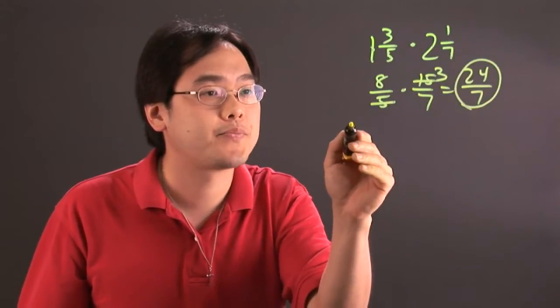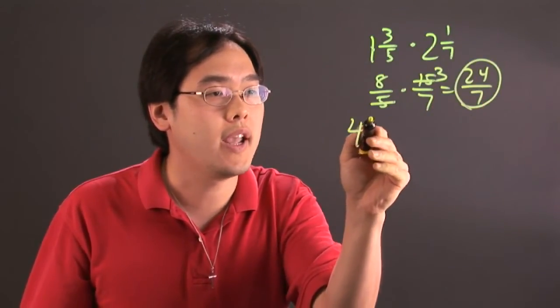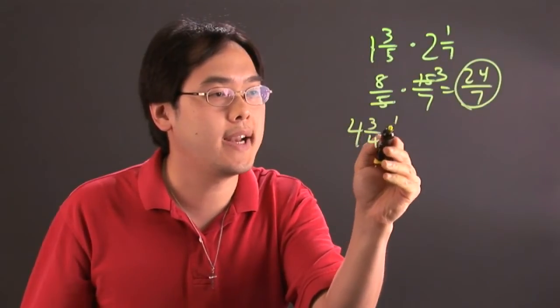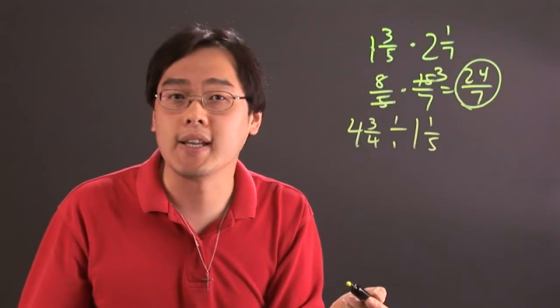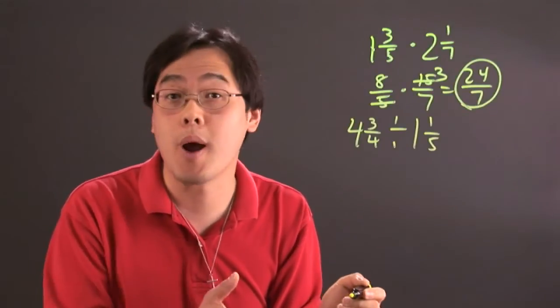Now if you have four and three-quarter divided by one and one-fifth, same kind of idea, convert it to an improper fraction first.